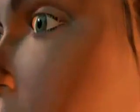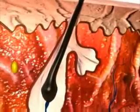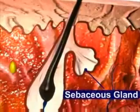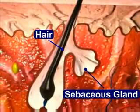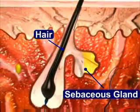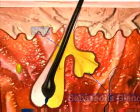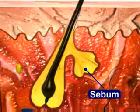The pilosebaceous unit, or PSU, of the skin consists of the sebaceous gland and the hair follicle. The sebaceous gland secretes an oily substance called sebum, which protects the hair and skin.